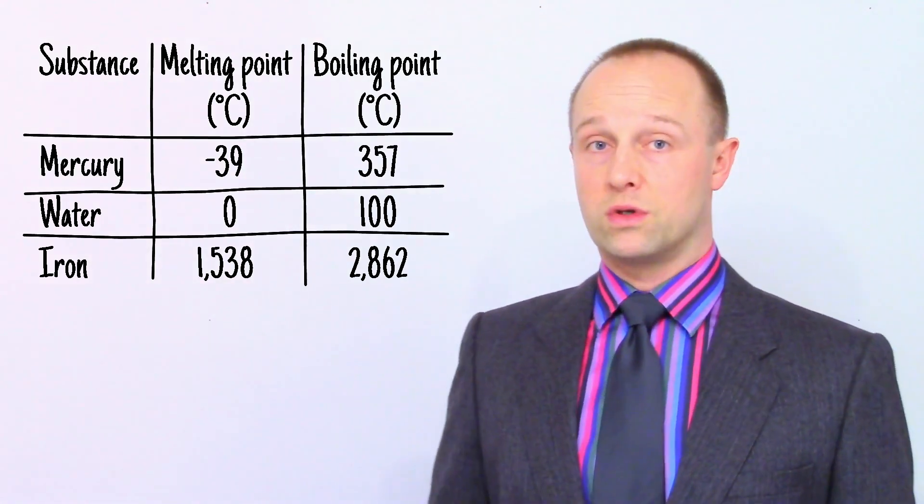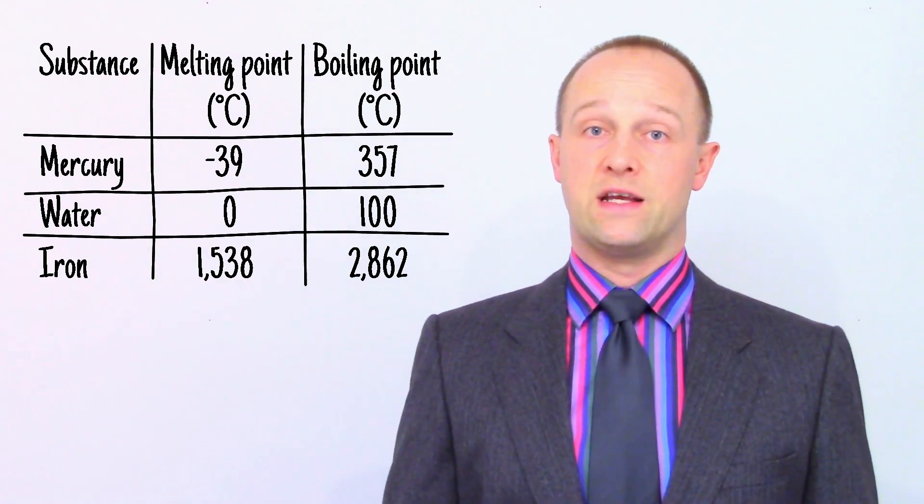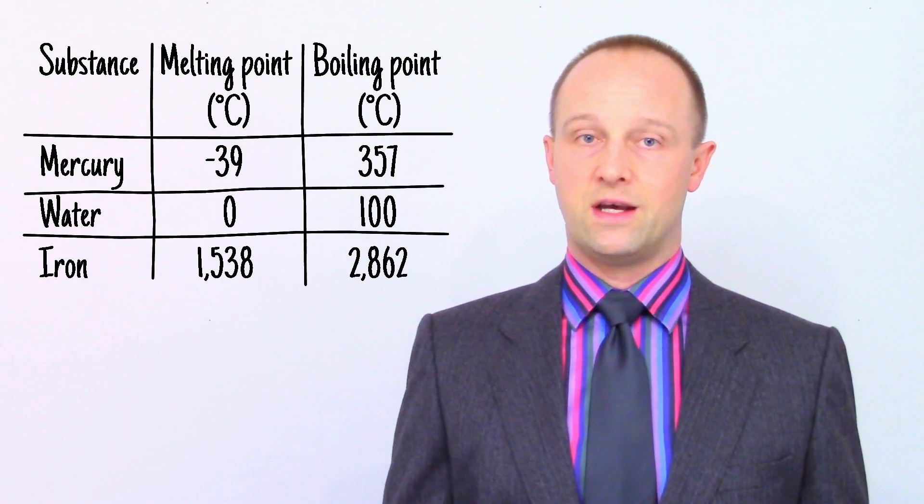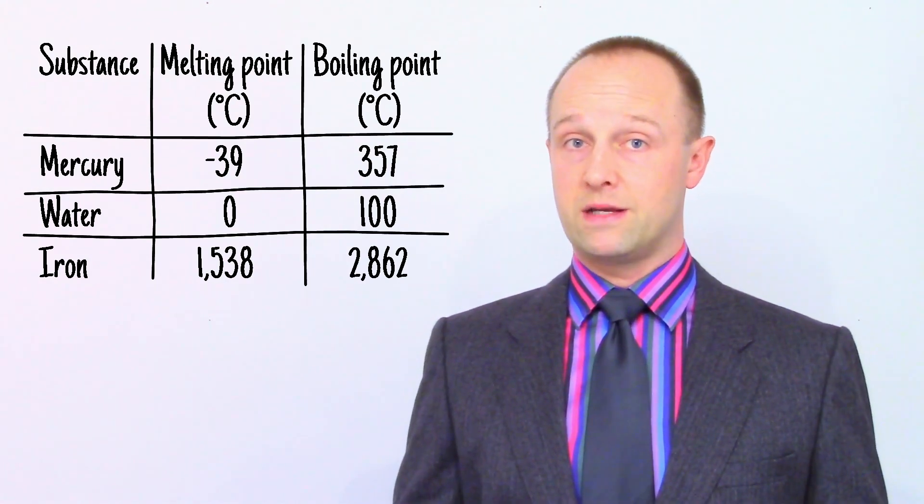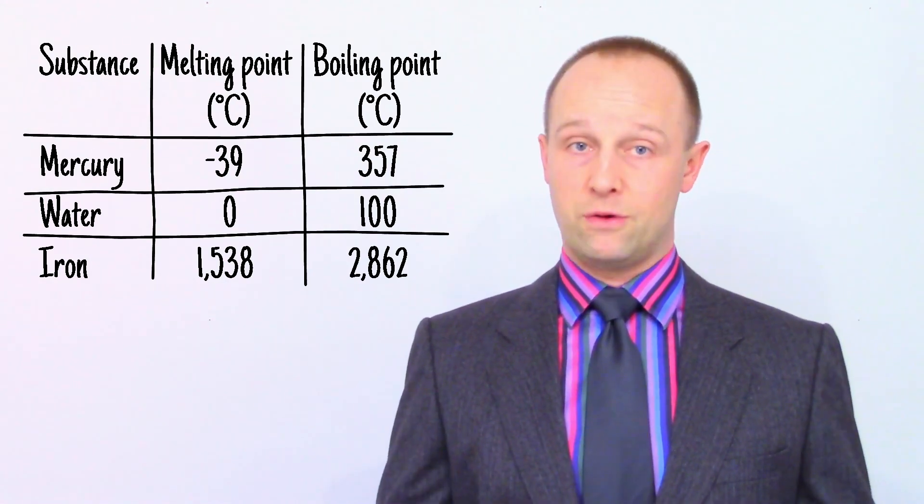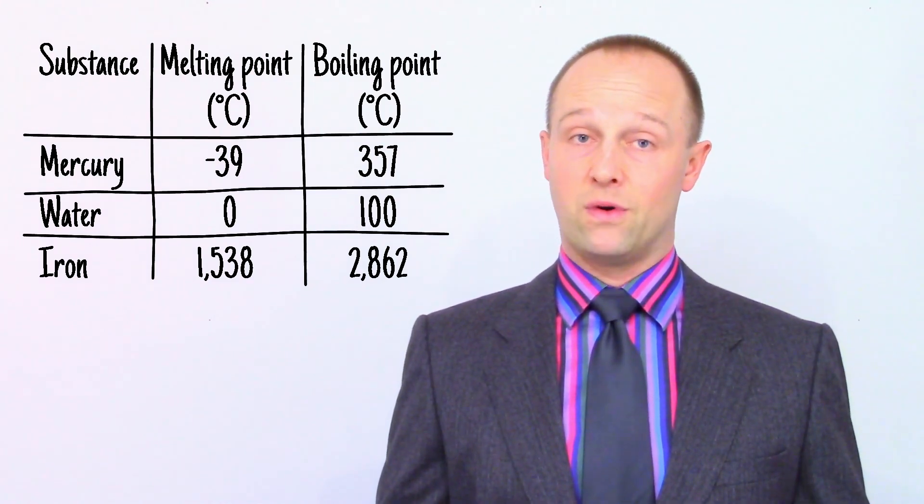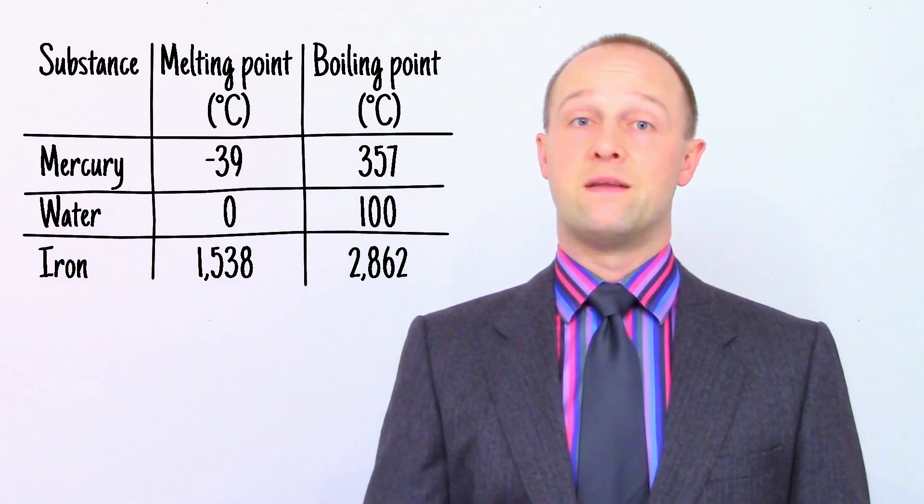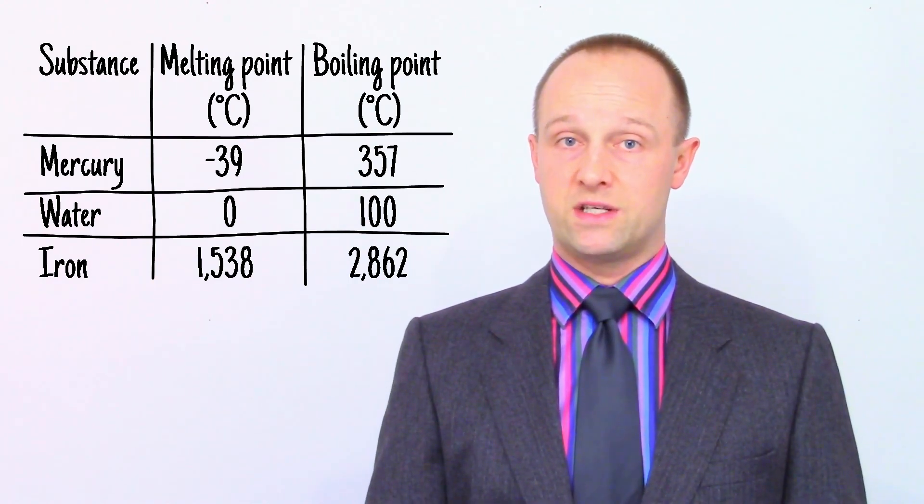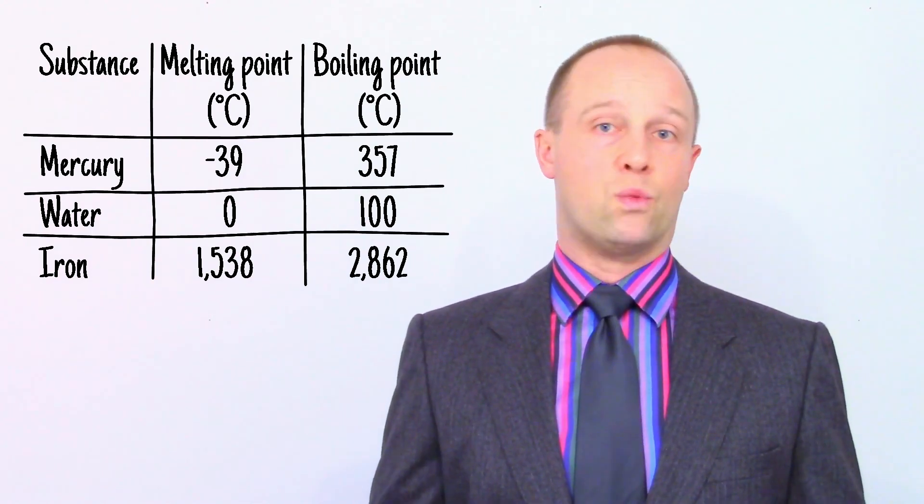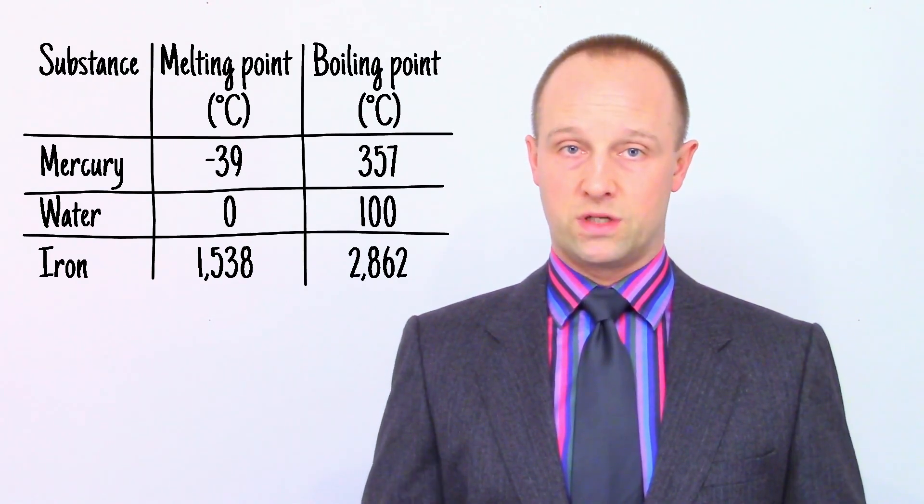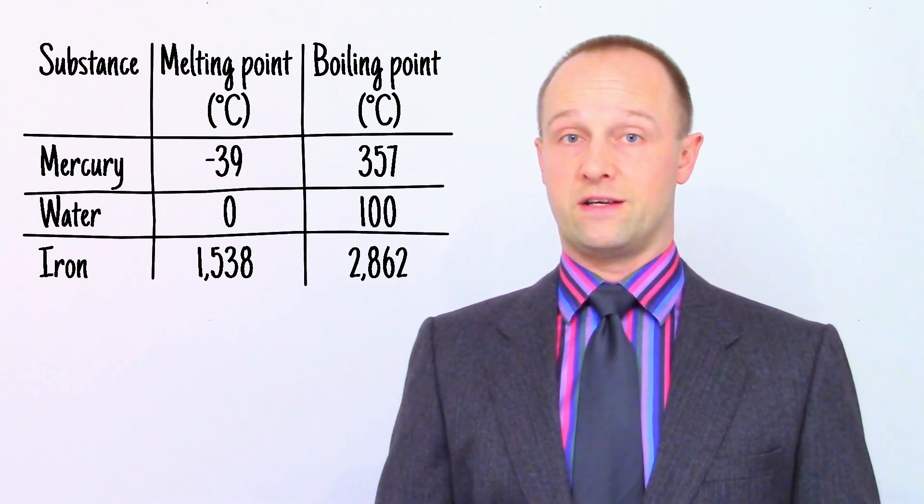So if we have mercury, water and iron, and the temperature is minus 10 degrees Celsius, then we are above the melting point for mercury but below the melting point for water and iron, and below the boiling point for all three. This means the mercury has melted at minus 10 degrees Celsius and is now a liquid, but the water and iron are still frozen. At 30 degrees Celsius, both the water and mercury are now liquid, but the iron remains a solid.